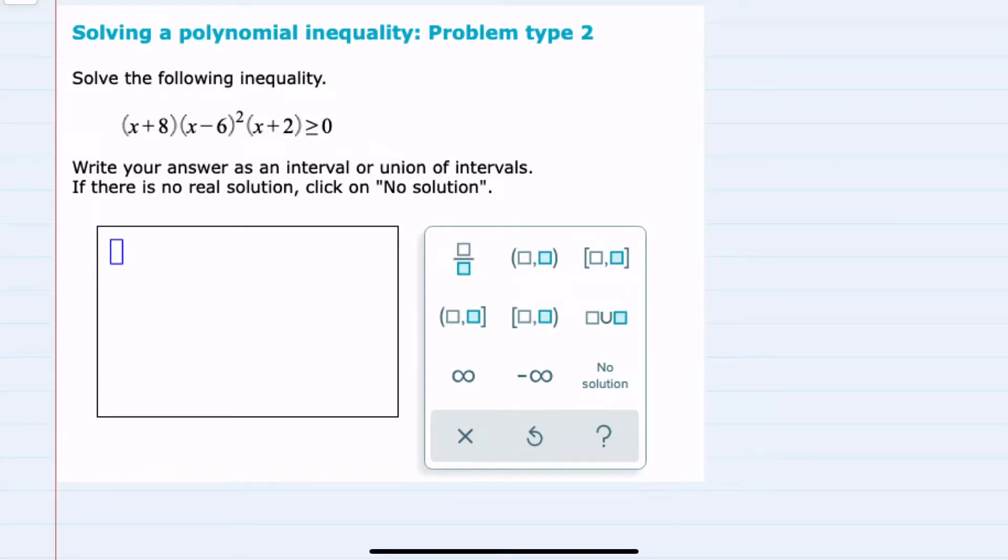In this video, I'll be helping you with the ALEKS problem type called Solving a Polynomial Inequality, Problem Type 2. We're given the inequality here with a polynomial factored on the left-hand side, being greater than or equal to 0.